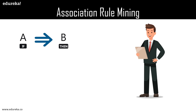The bread, butter, and eggs example is a small illustration. But what if you have thousands of items? A professional data scientist working with that data can provide the right examples and right placement of items, generating a lot of insights. That is why association rule mining is a very useful algorithm which helps businesses make profit.